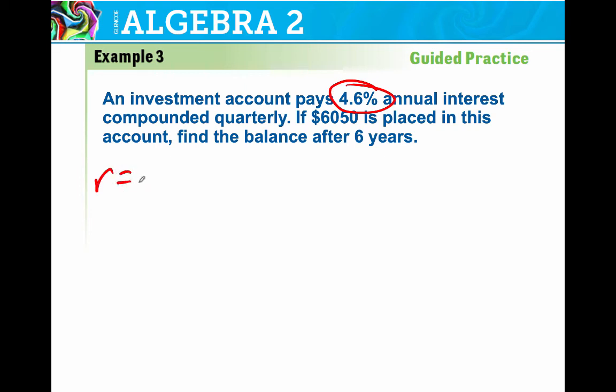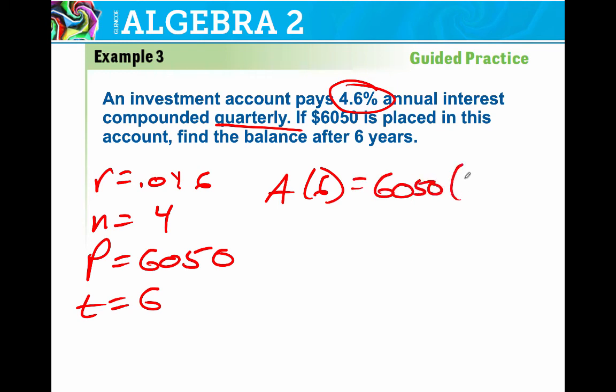Same thing here. I got a rate of 0.046. I have compounded quarterly. Again, n equals 4. The initial value principle is 6,050. And we want to know after 6 years. So I'm going to do the amount after 6 years is equal to the initial investment times 1 plus the rate divided up into 4 equal segments. And then we got 4 times 6 or 24 up top. Plug it and chug it and we're good. I got a parenthesis issue here. What happened? I got 7,960.43. So the $6,050 grew to 7,960.